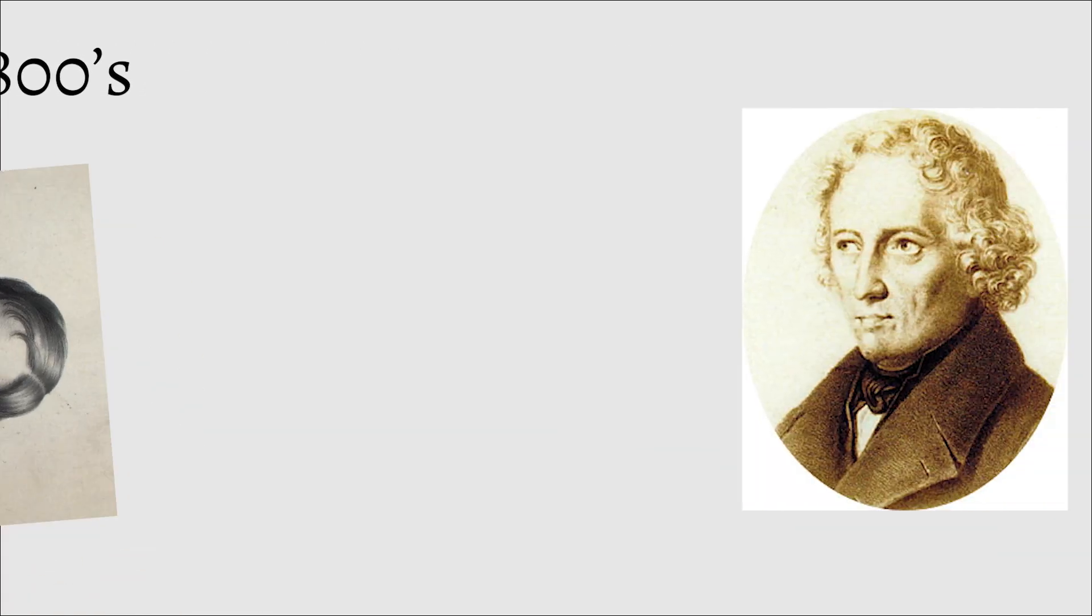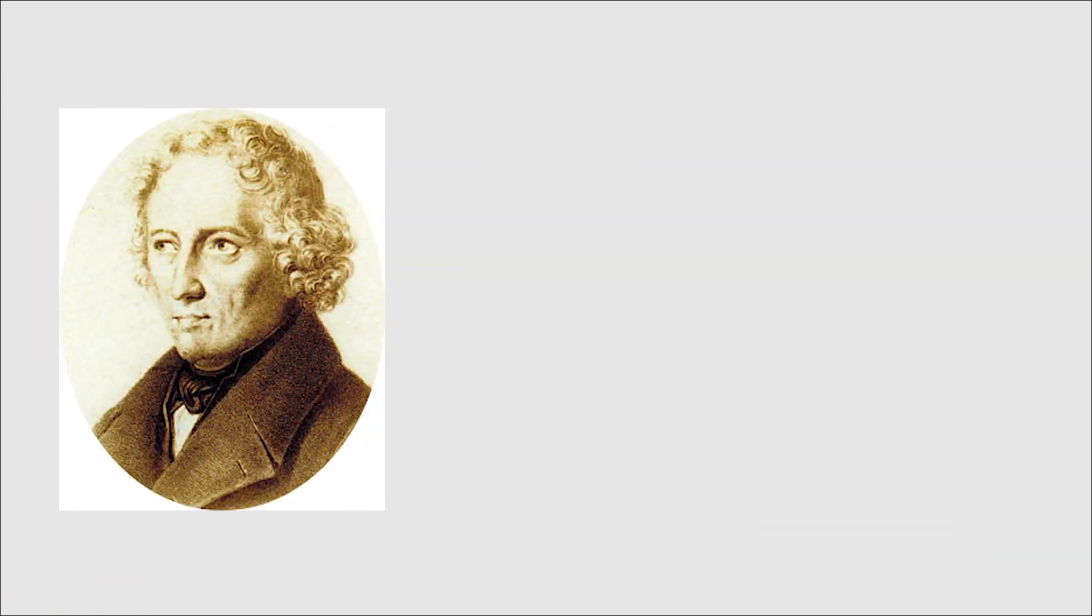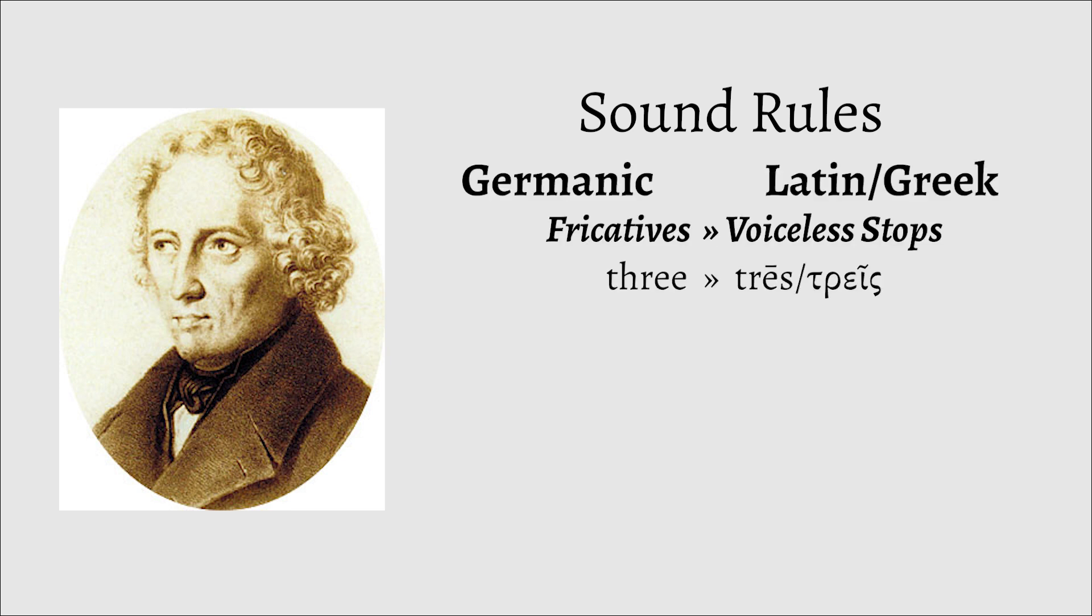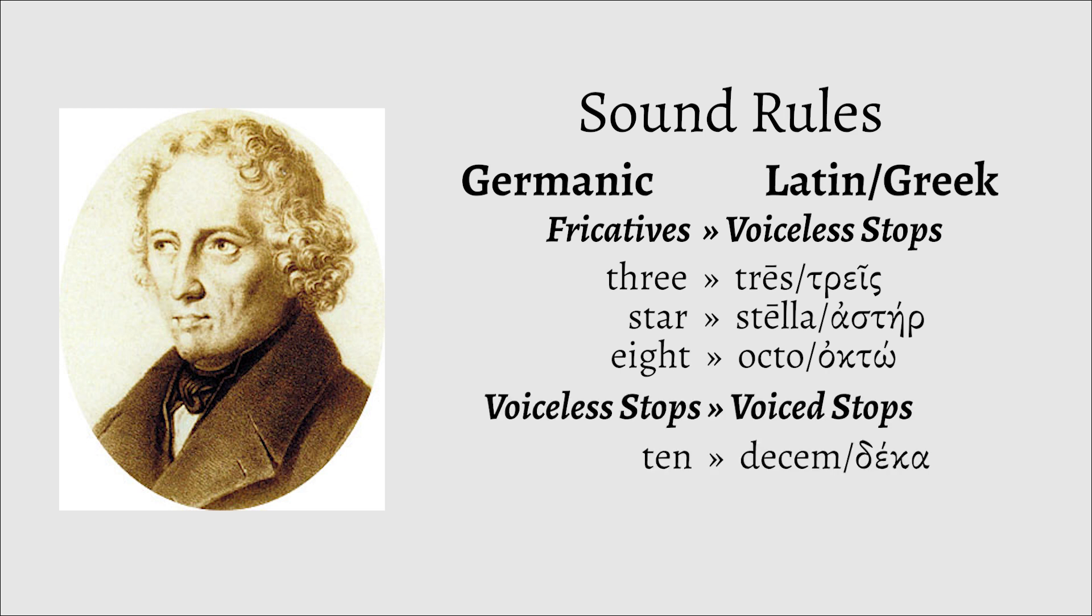A few years later, a German scholar made a similar connection. However, unlike Rask, he formulated rules for these correlations and found that fricatives in the Germanic languages correspond to voiceless stops in Latin and Greek, when not led by an S or in a cluster with another stop, in which case only the first stop became a fricative. Meanwhile, voiceless stops in Germanic correspond to voiced stops in Latin and Greek, and voiced obstruents in Germanic correspond to Latin fricatives and Greek-aspirated stops.